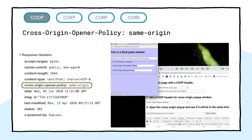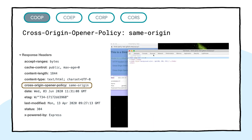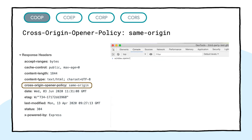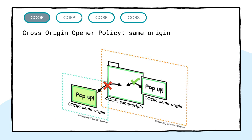When Cross-Origin-Opener-Policy same-origin is set, any cross-origin window opened from the document will have no access to the opener's DOM, so window.opener will return null. This is how the document achieves isolation from the cross-origin window.